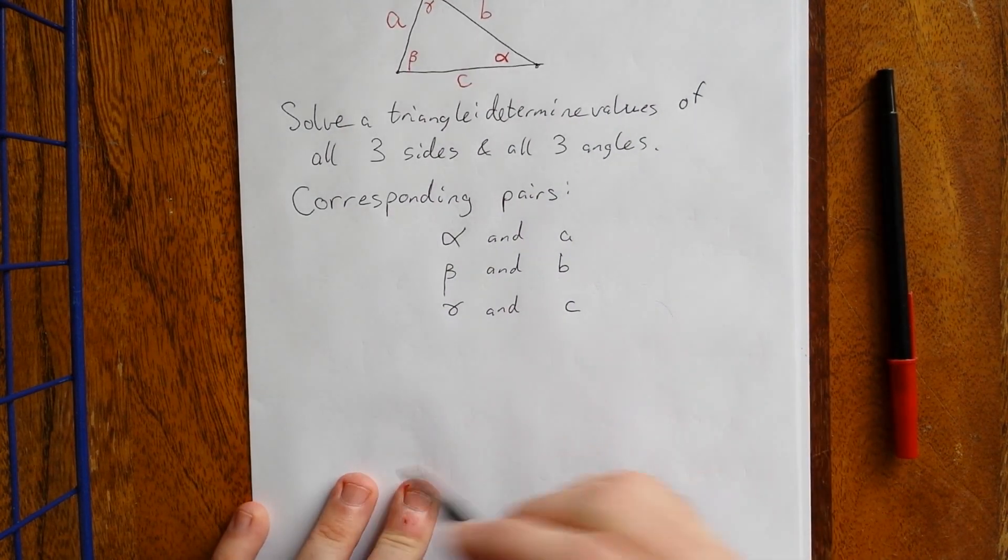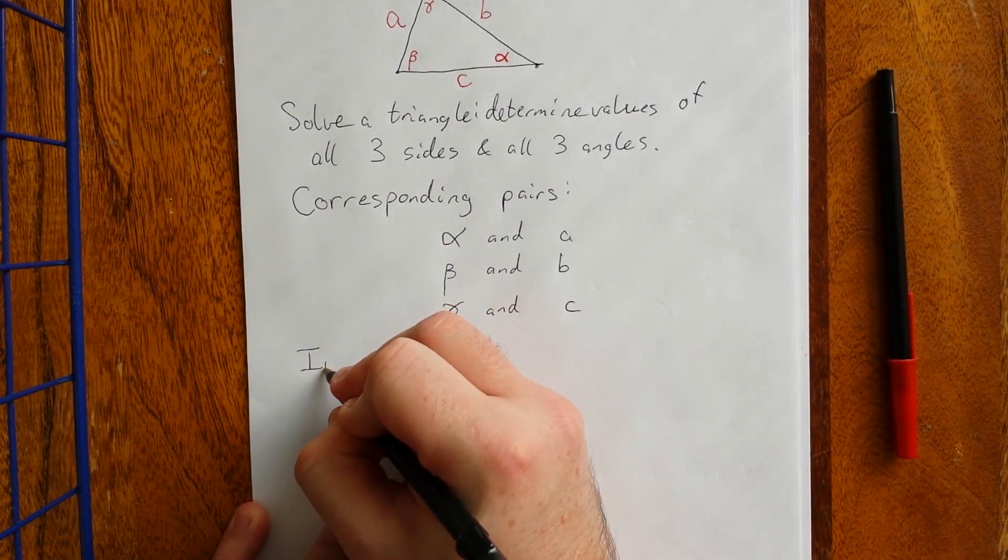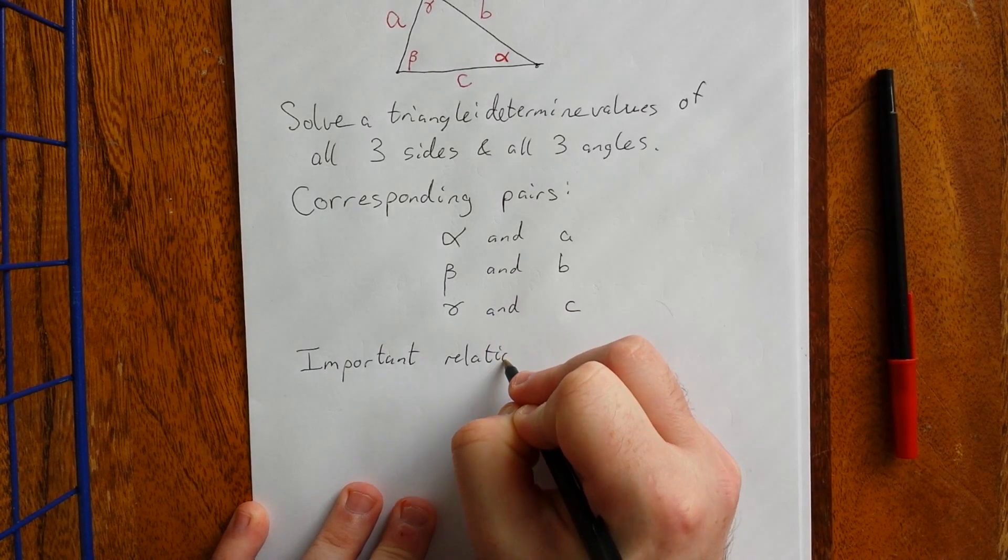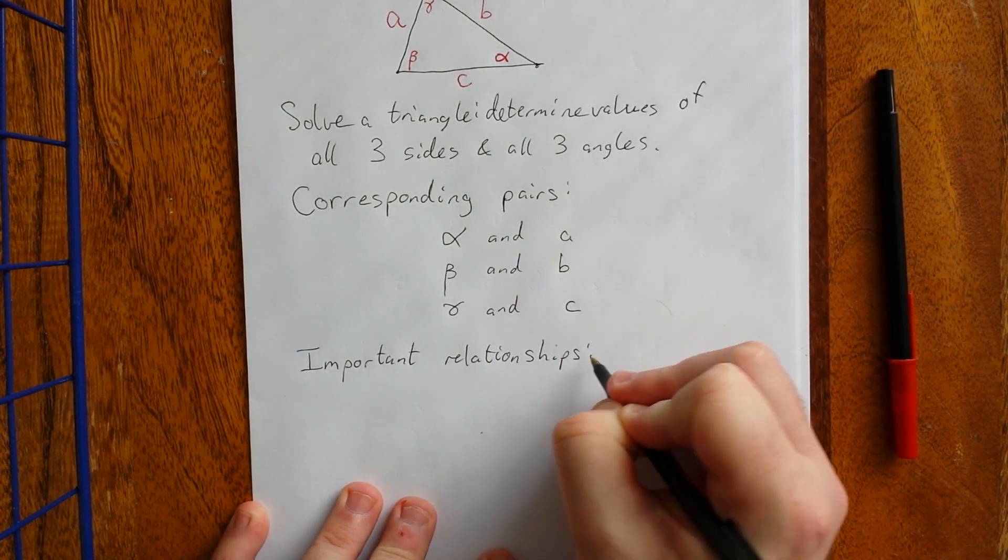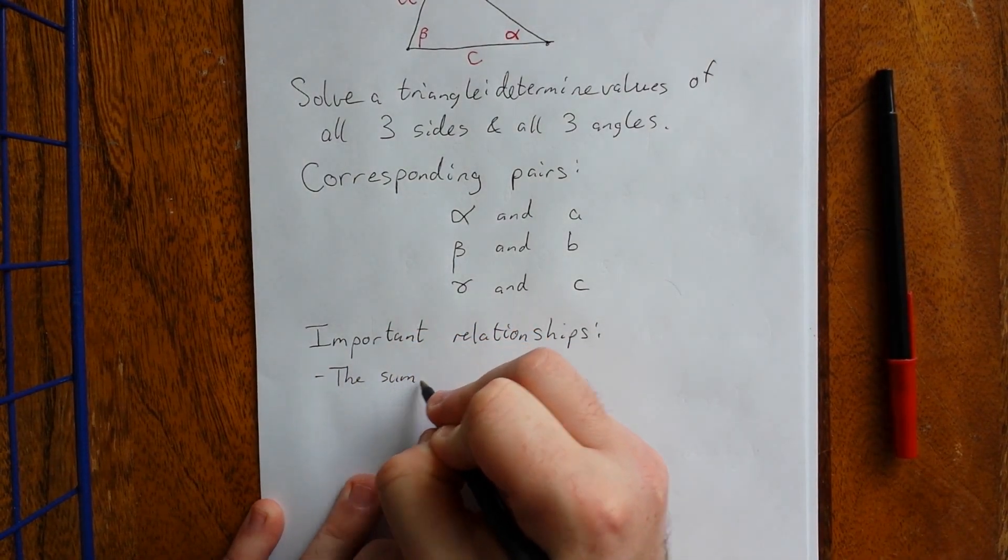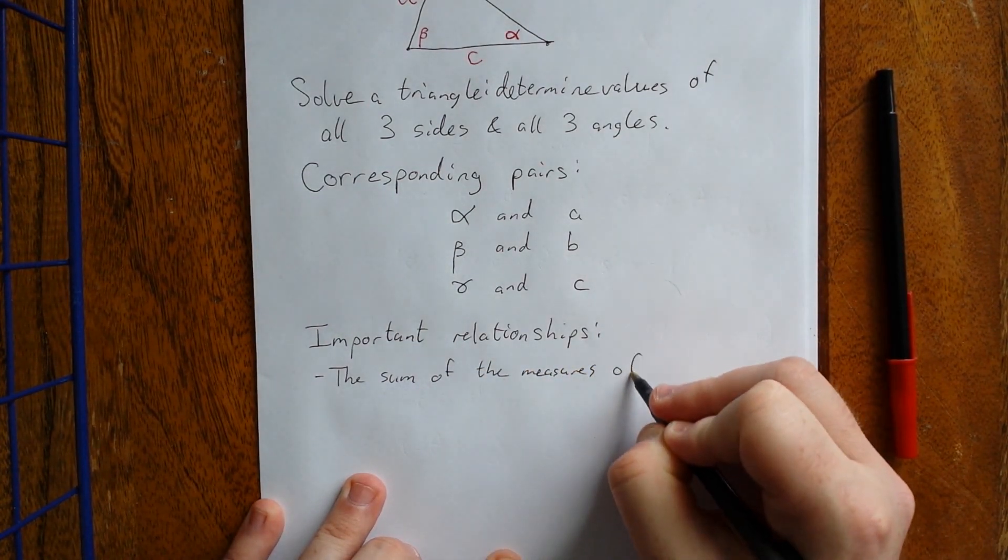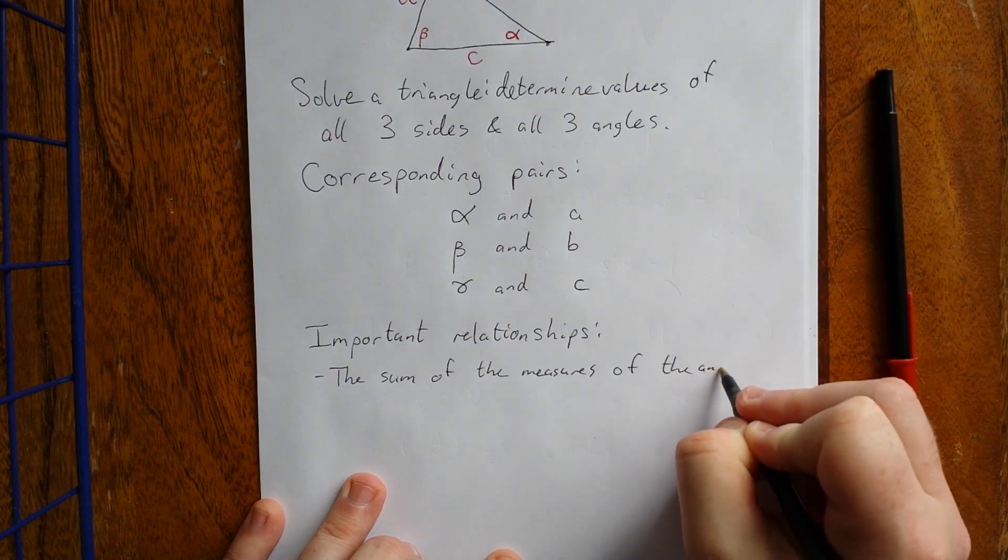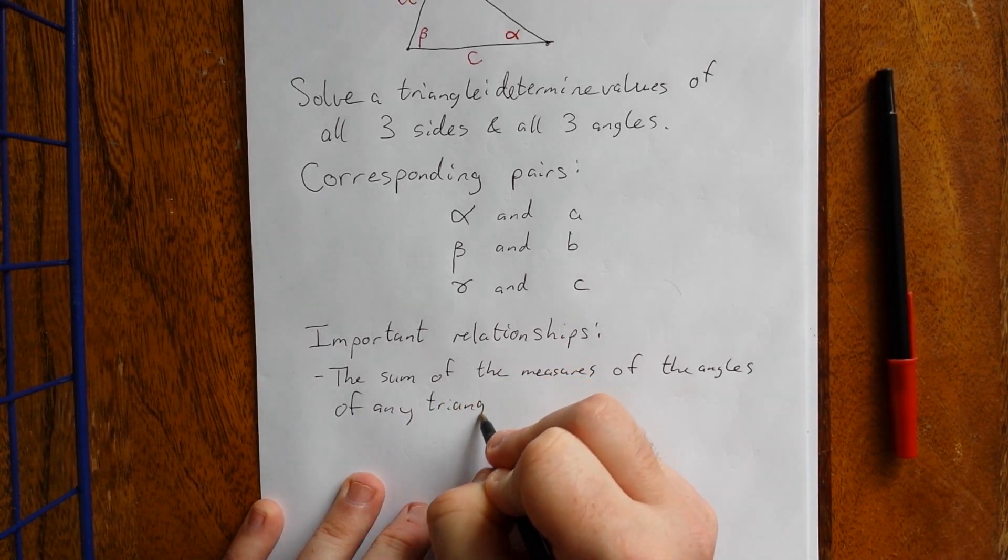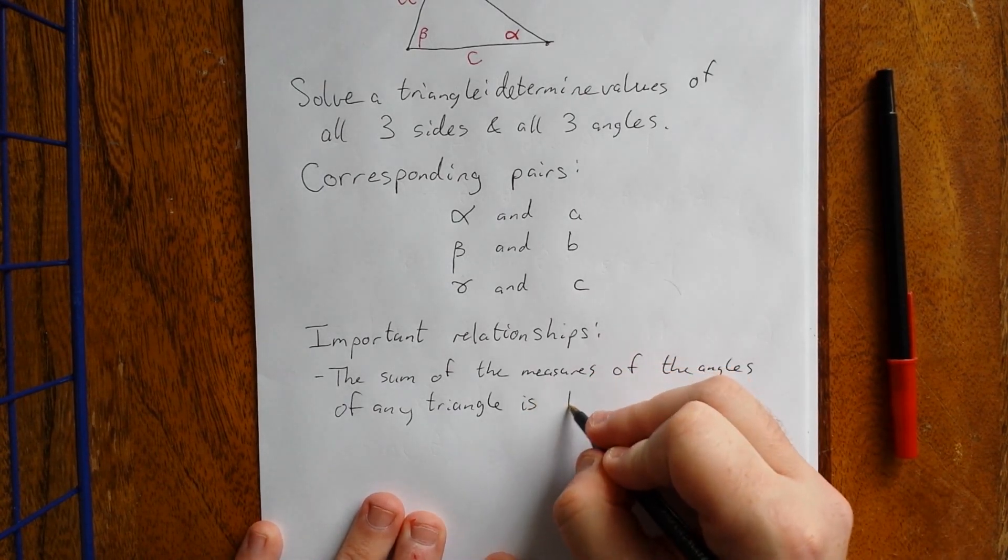So for your corresponding angle-side pairs and your angles and sides of a triangle, there are some important relationships. The first one is that the sum of the measures of the angles of any triangle, well any planar triangle, of any triangle that we're going to be talking about in the scope of this course, it's going to be 180 degrees.